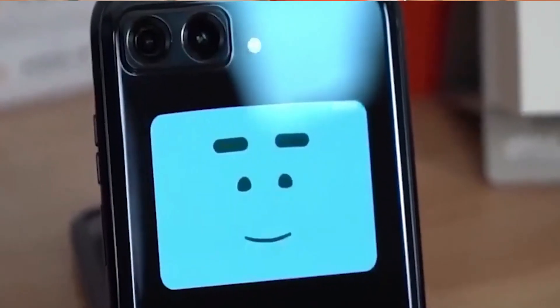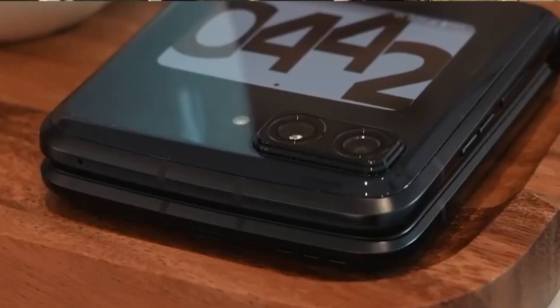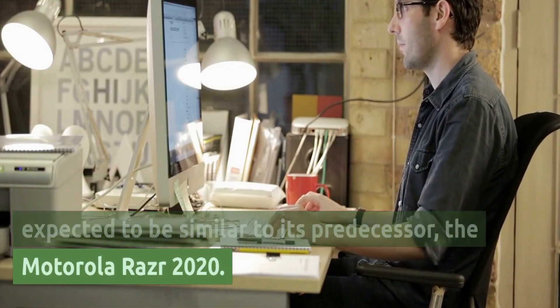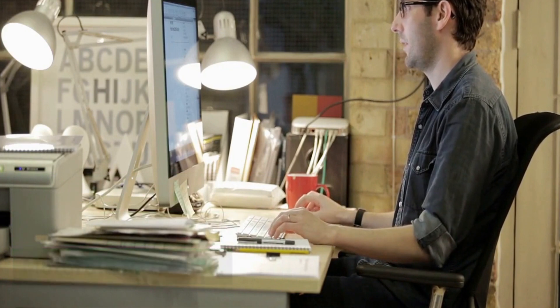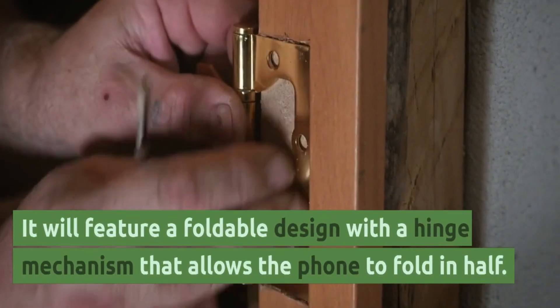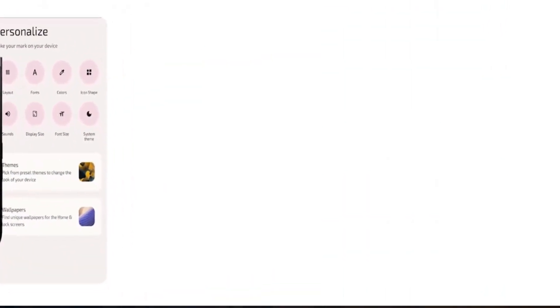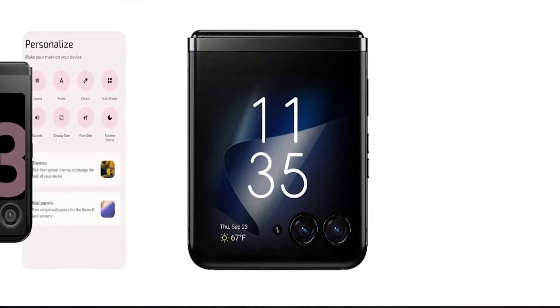Design and build quality. The design of the Motorola RAZR 40 Ultra is expected to be similar to its predecessor, the Motorola RAZR 2020. It will feature a foldable design with a hinge mechanism that allows the phone to fold in half. The phone will have a plastic front panel when opened and a glass front panel when closed.